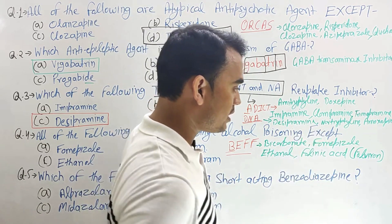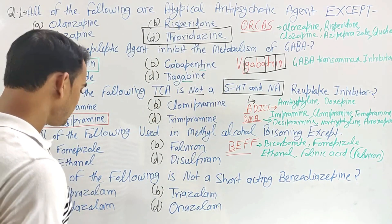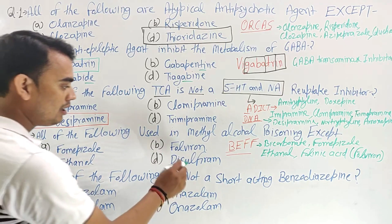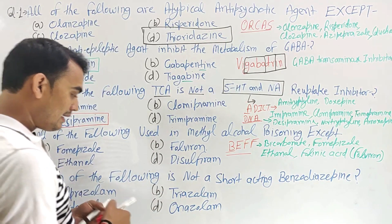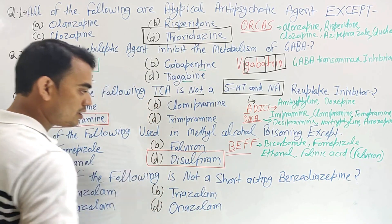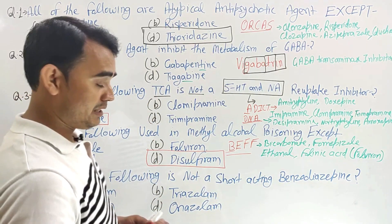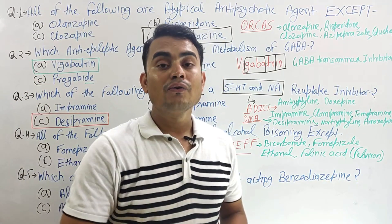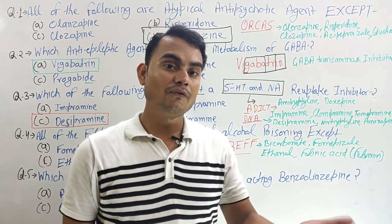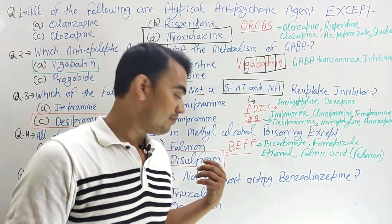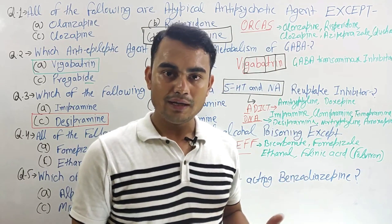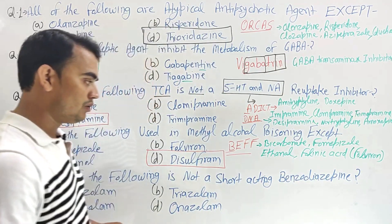So these are the actions of all four drugs. In the options, fomepizole — yes. Leucovorin — correct. Ethanol — yes. And disulfiram — here our right answer is disulfiram. Disulfiram cannot be used for methyl alcohol poisoning because it inhibits aldehyde dehydrogenase, causing formaldehyde concentration to continuously increase in the body.